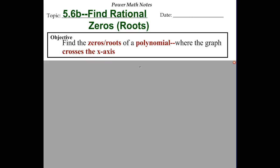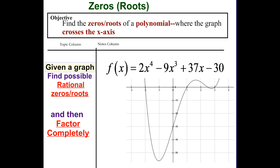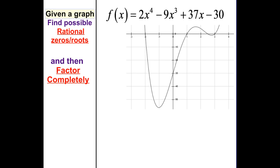In this video we're going to talk about the second part of 5.6, which is finding the rational zeros and the roots, and we're actually going to graph those as well. First thing I want to do is look at an actual graph and figure out the rational zeros from that graph. How many possible zeros can there be? All you have to do is look at your degree — the power of your polynomial will tell you how many possible rational zeros you can have.